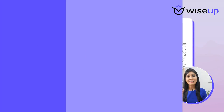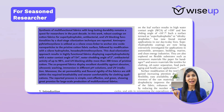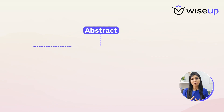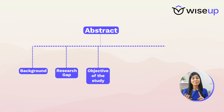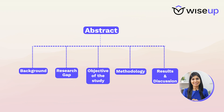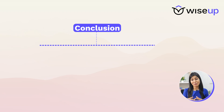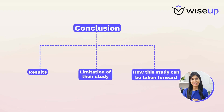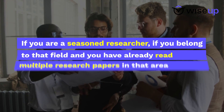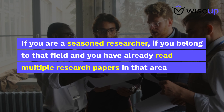Once you've read the title, journal name, author affiliation, and date, we come to the main content of the paper. If you're a seasoned researcher, start by reading the abstract and the conclusion first. The abstract usually contains the background, research gap, objective, methodology, and even the results, while the conclusion covers results, limitations, and how the study can be taken forward. Just by reading these two sections you will get an understanding of the entire content of the paper.